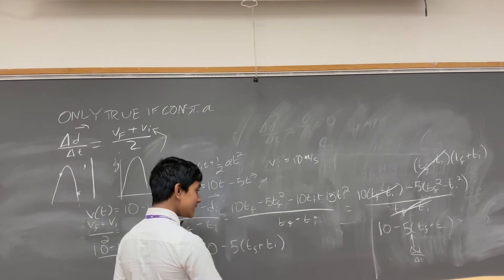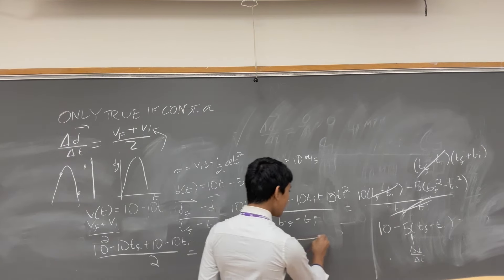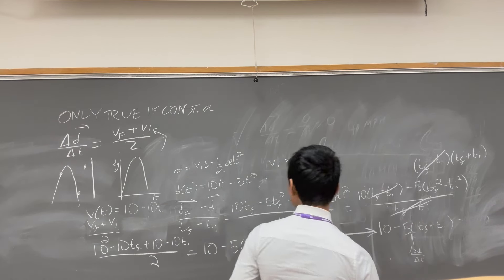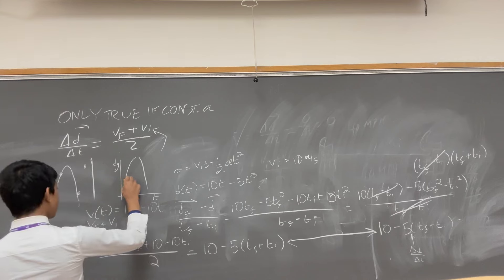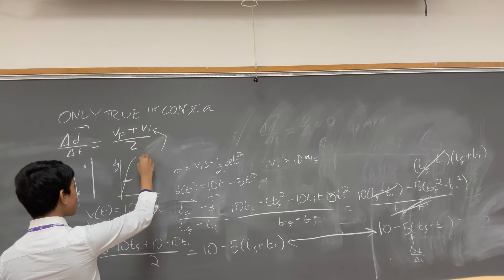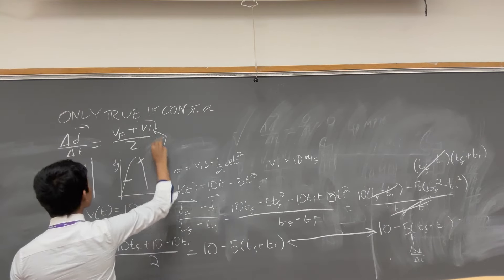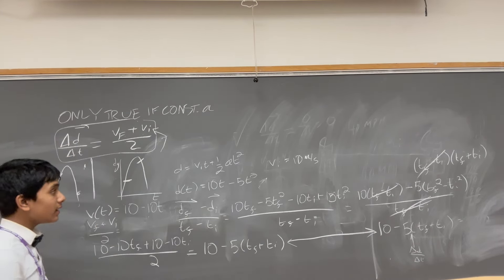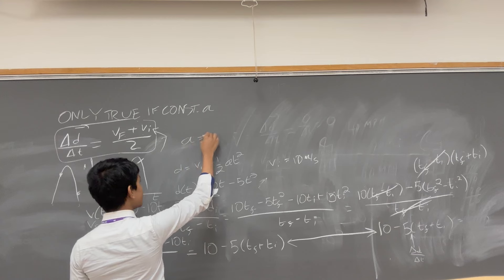But wait a second. Beautifully, we see that that's the exact same thing as what we got on the other side. Which means that for an arbitrary initial time that we choose and an arbitrary final time we choose, this relation holds. But remember that this is only if our acceleration, which in this case is g, is constant.